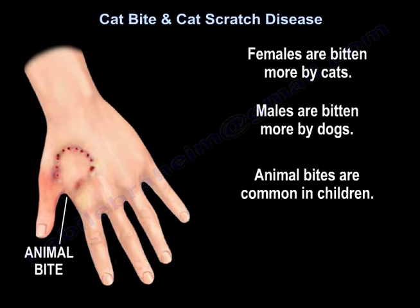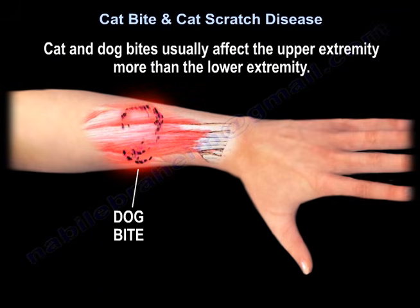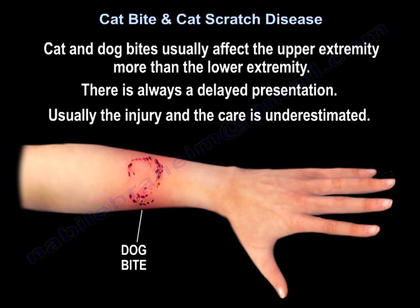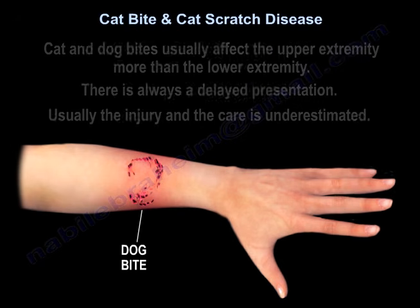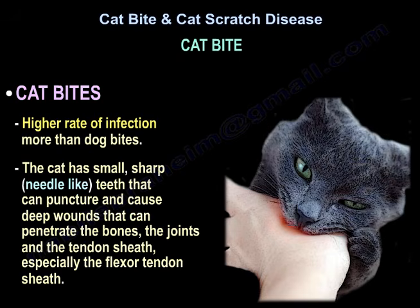Animal bites are common in children. Dog bites usually affect the upper extremity more than the lower extremity, and there is always a delayed presentation — the injury and the care are usually underestimated.